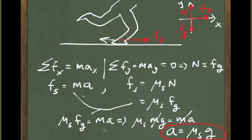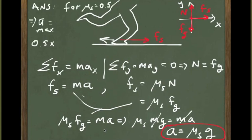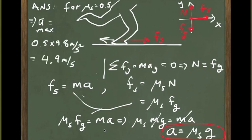The ultimate limit for the acceleration achievable by a runner is determined by the kind of shoes used. The shoes determine the coefficient of static friction, and that coefficient multiplied by g gives the maximum possible acceleration. For the specific problem with μs = 0.5, we obtain a maximum acceleration of 4.9 m/s². No matter how powerful the runner's legs are, no runner using shoes with a coefficient of static friction of 0.5 could ever accelerate faster than 4.9 m/s².